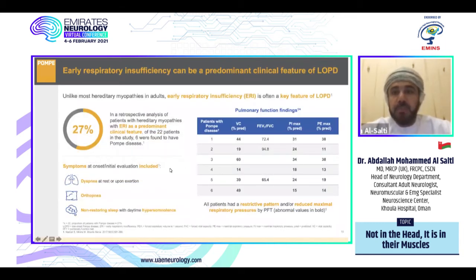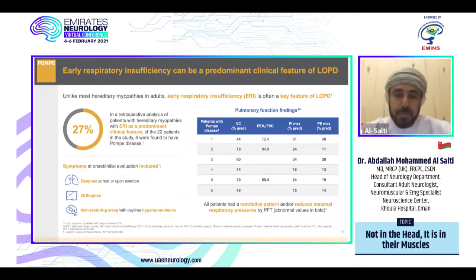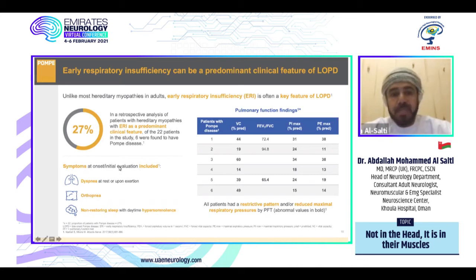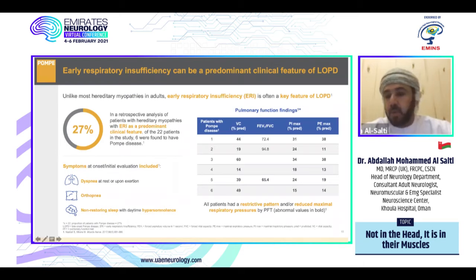Early respiratory insufficiency can be a predominant clinical feature of Pompe disease and is the key feature of late onset Pompe disease — it should alert all neurologists and physicians. In a retrospective analysis of patients with hereditary myopathy presenting with early respiratory insufficiency as a predominant feature, 6 out of 22 patients (around 27%) had respiratory problems. Symptoms at onset included dyspnea, orthopnea, non-restorative sleep, or daytime hypersomnolence. All patients had a restrictive pattern or reduced maximal respiratory pressures on pulmonary function testing.